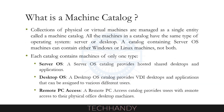What is a Machine Catalog? Collections of physical or virtual machines managed as a single entity are called a Machine Catalog. All the machines in a catalog have the same type of operating system — server or desktop. A catalog containing server OS machines can contain either Windows or Linux machines, not both. Each catalog contains machines of only one type. Server OS: a Server OS Catalog provides hosted shared desktops and applications. Desktop OS: a Desktop OS Catalog provides VDI desktops and applications that can be assigned to various different users. Remote PC Access: a Remote PC Access Catalog provides users with remote access to their physical office desktop machines.